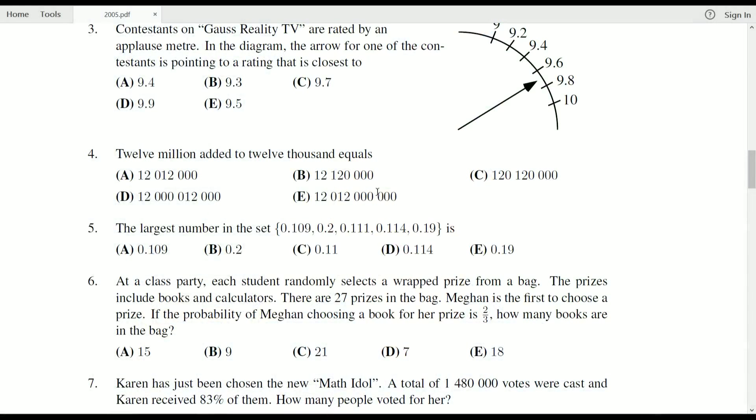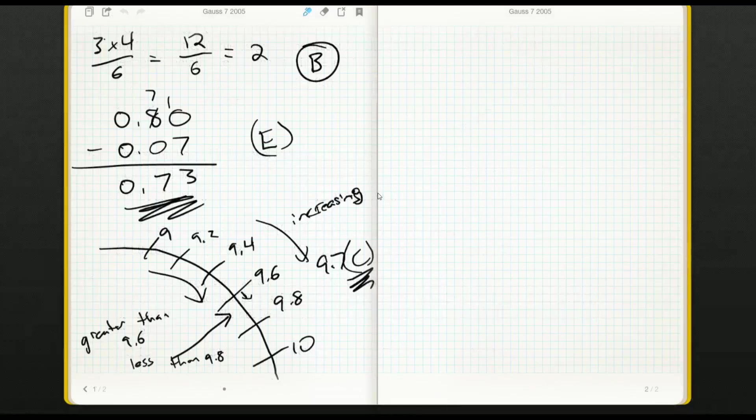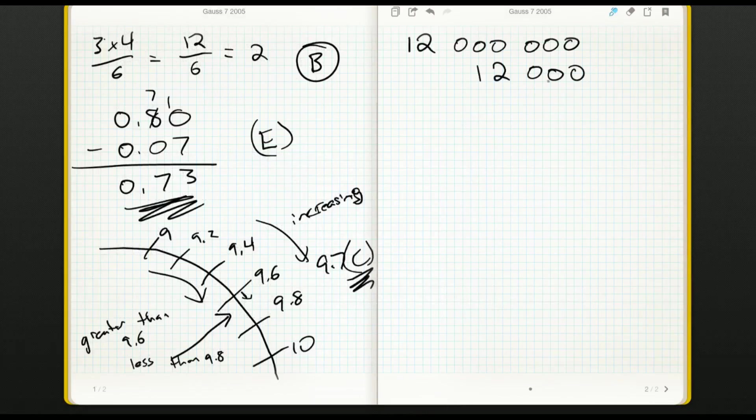So I would first write these numbers not in words but with digits. Twelve million, we have to remember that that's twelve followed by six zeros for a million, and then twelve thousand just has three zeros.